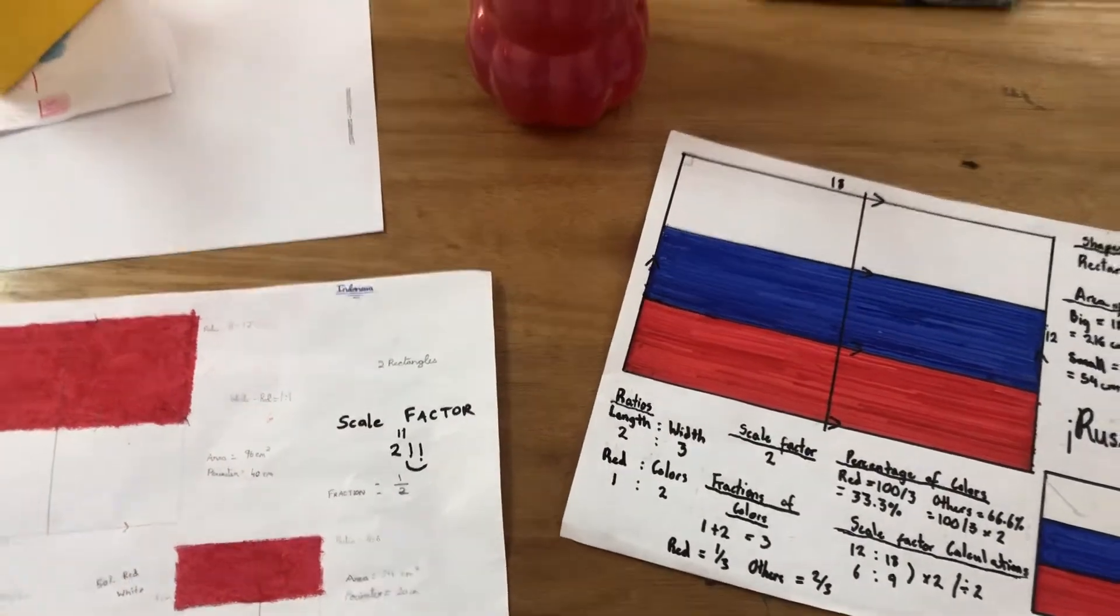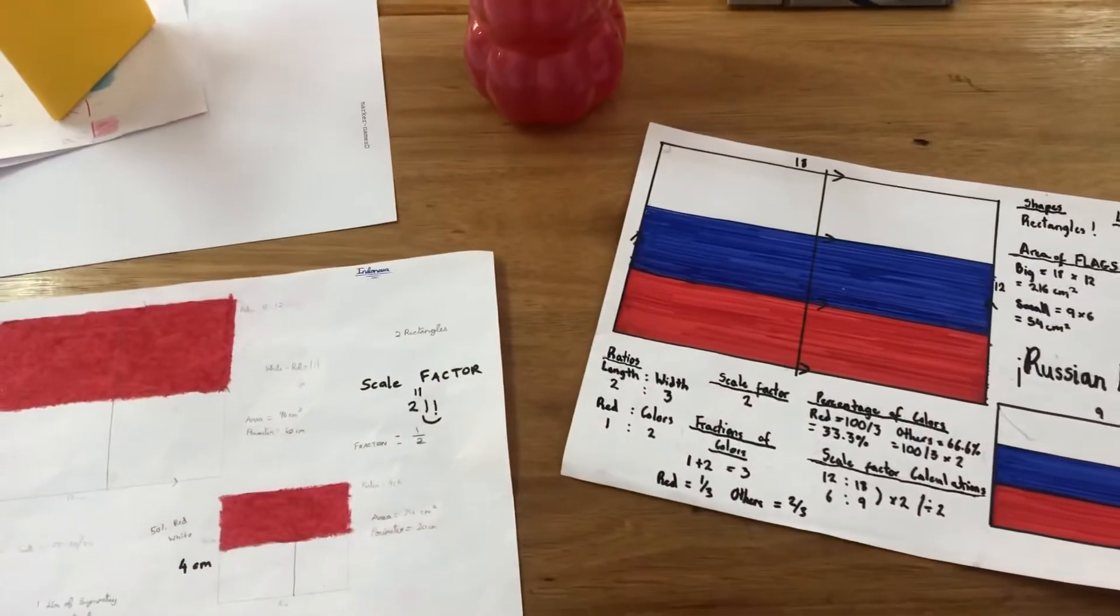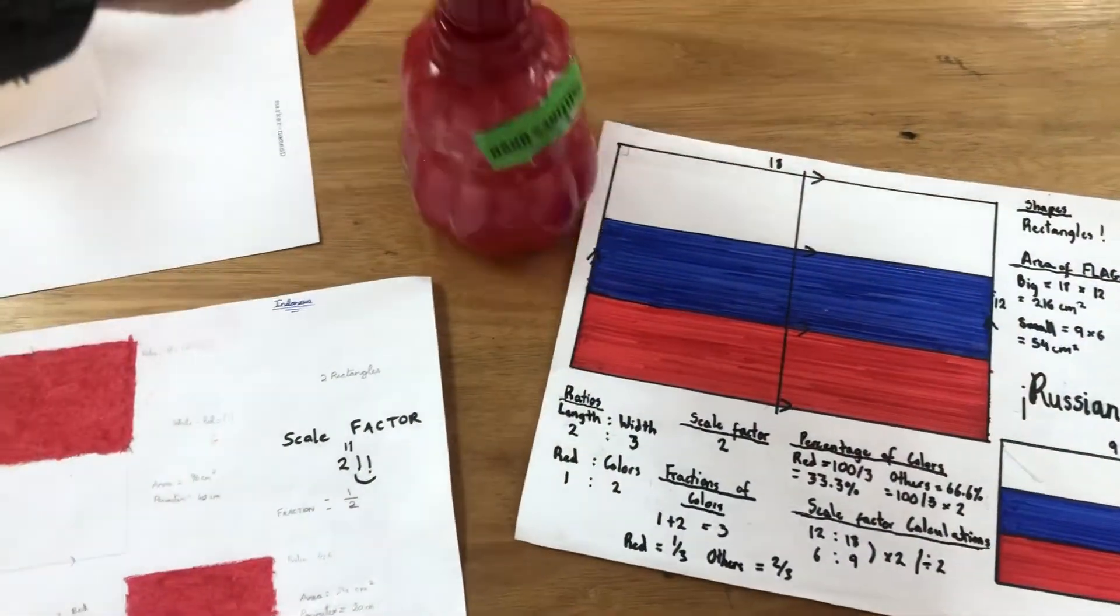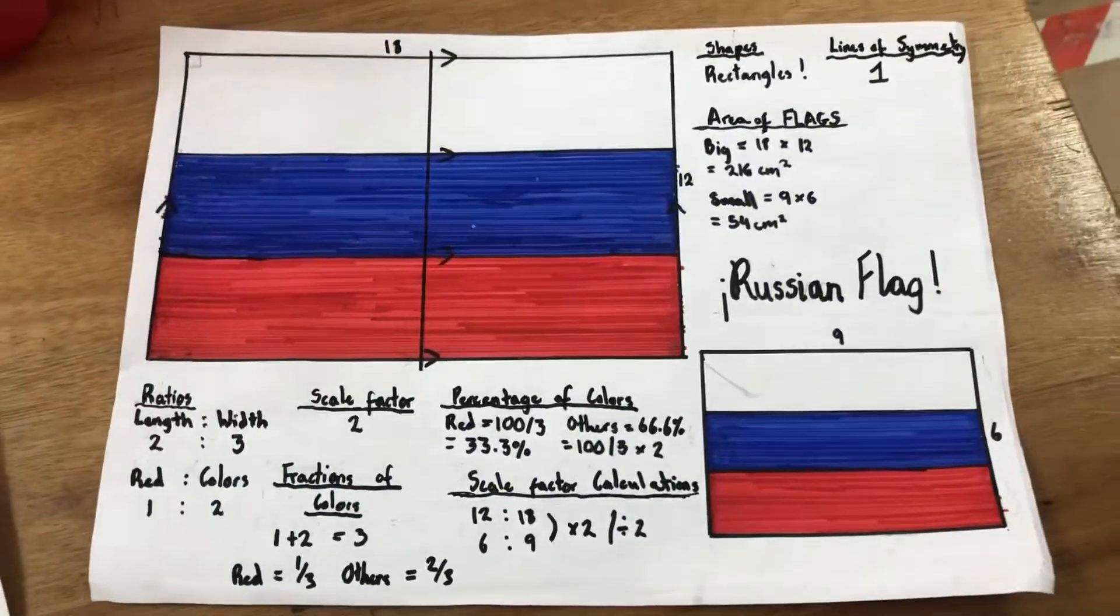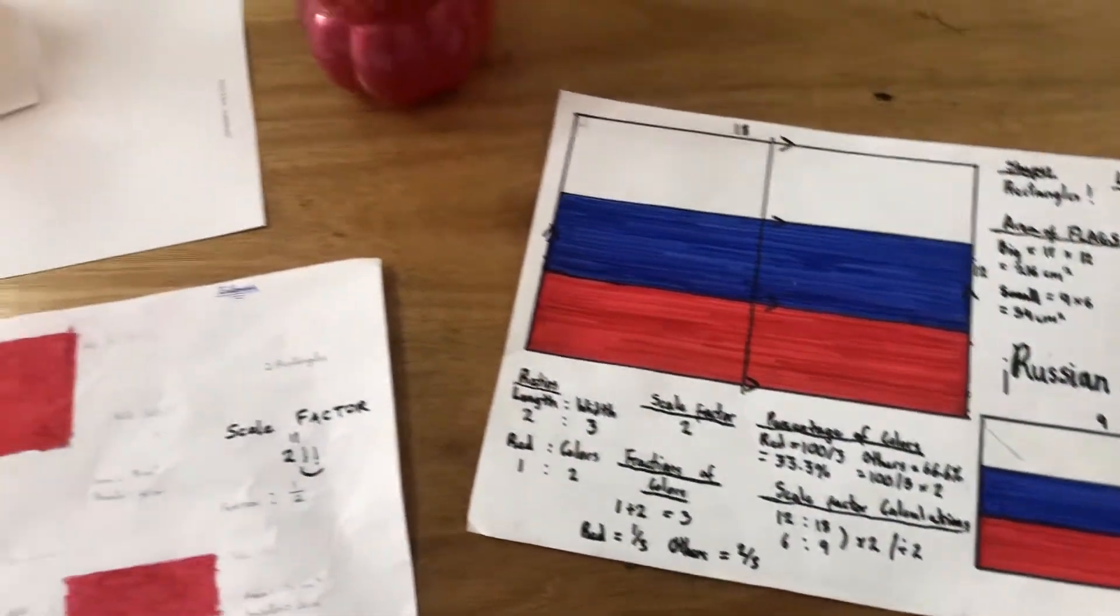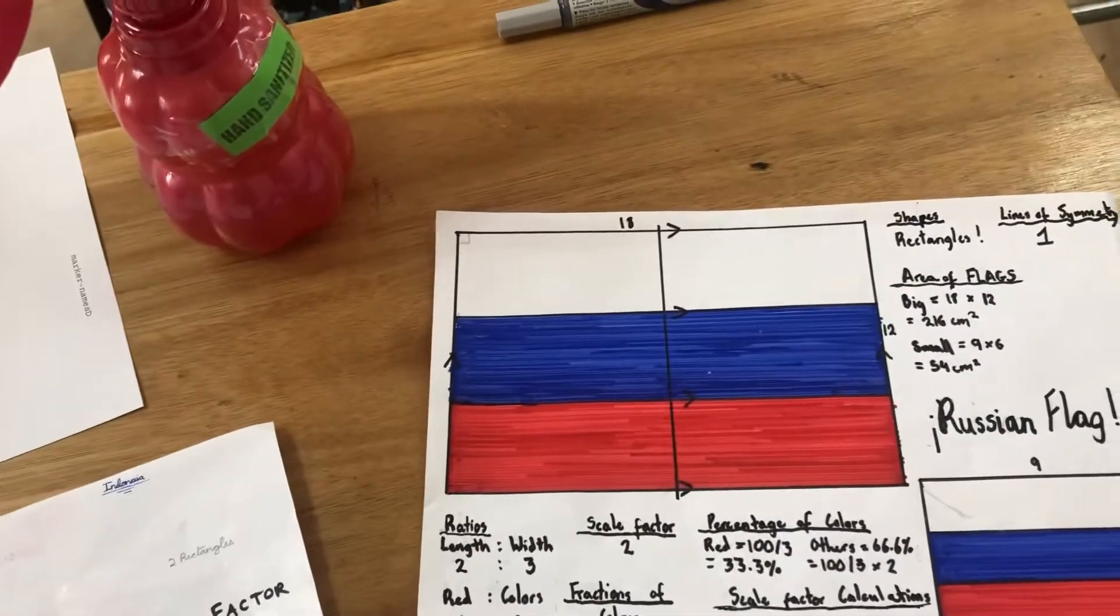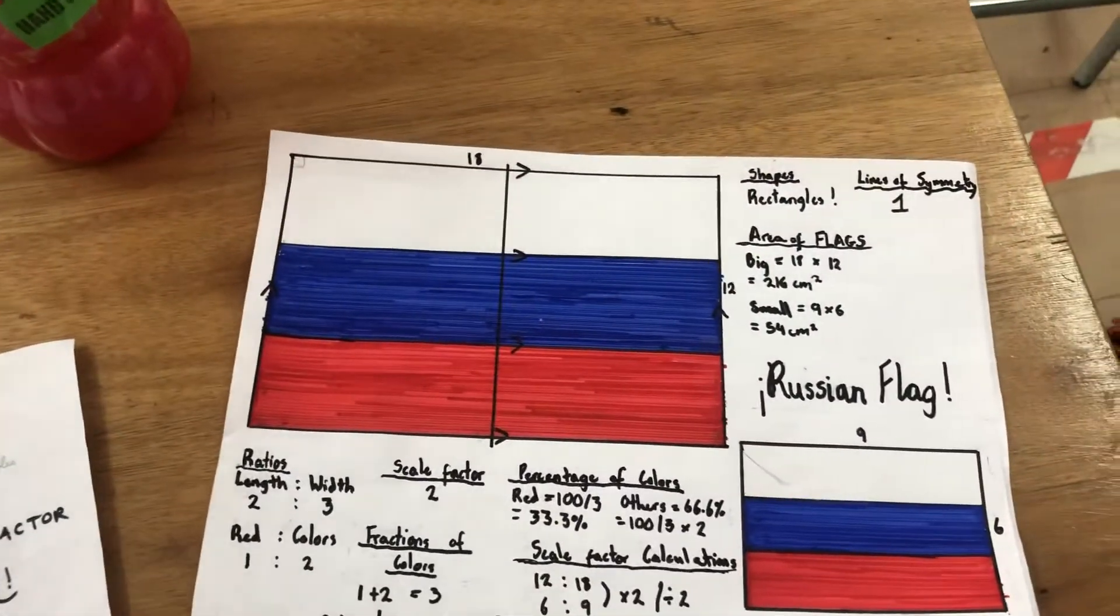Hello and welcome to Martin Maths. Today we're going to see about flags. We can include any maths like length to width ratio, scale factors, colors ratio, parallel lines, area, symmetry, perimeter, shapes, etc.